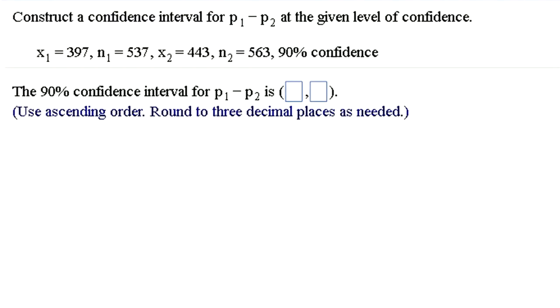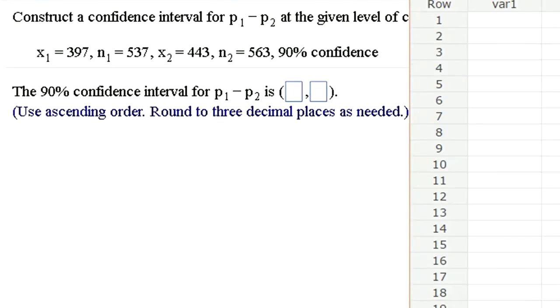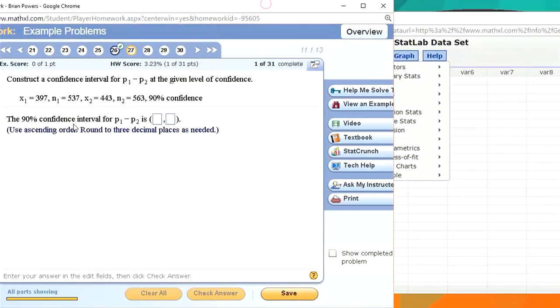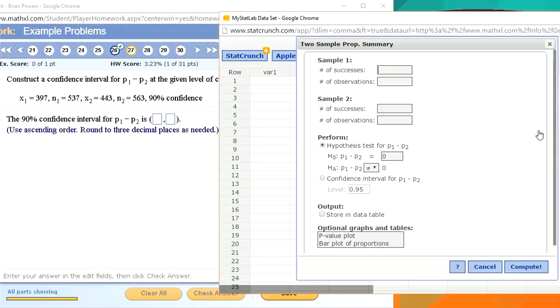All right, well let's see what a confidence interval would be. So I'm going to close that and open up. To find the confidence interval for a difference of two proportions, it's again going to be under Proportion Stats, Two Sample with Summary. But this time I'm going to click Confidence Interval for P1 minus P2. I'll set the confidence level at 0.90.